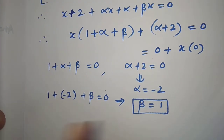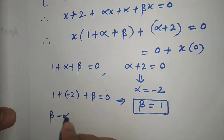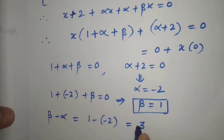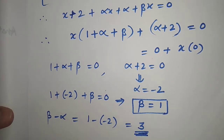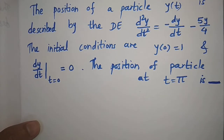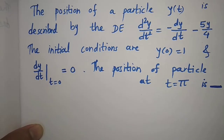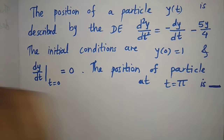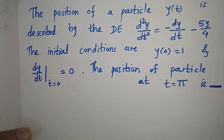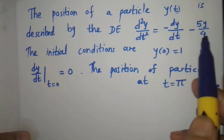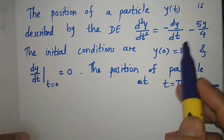Correct. And hence the value of beta minus alpha is 1 minus (minus 2), which is equal to 3. Now let us solve another problem. The problem is about the solution of a differential equation with given initial conditions.